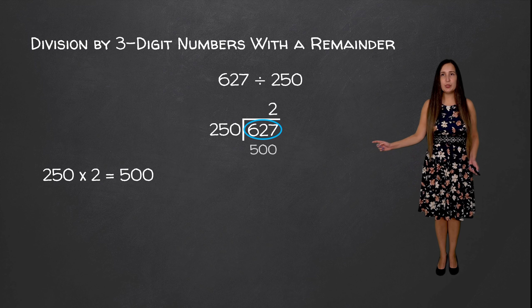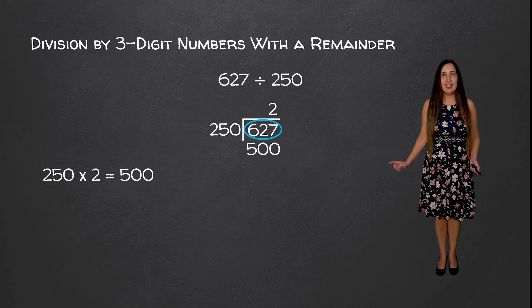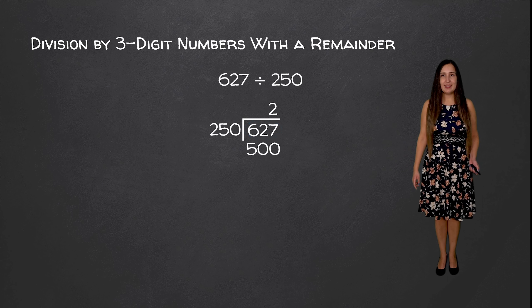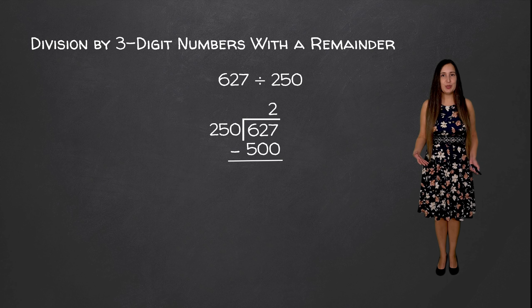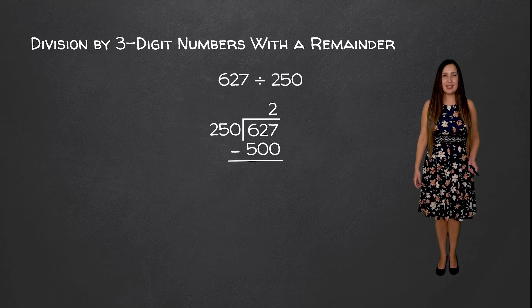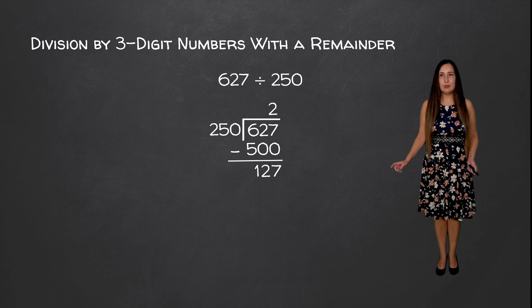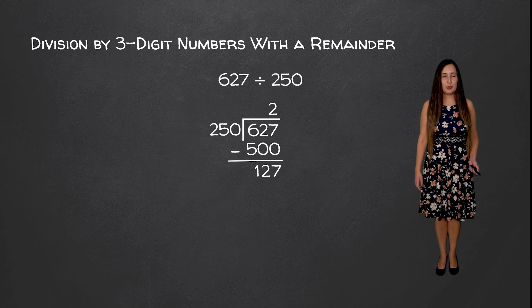So we're going to write the value down here, and we are going to subtract these two to see how much we have left over. 627 minus 500 is equal to 127.